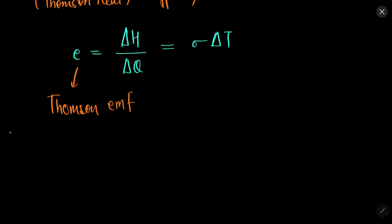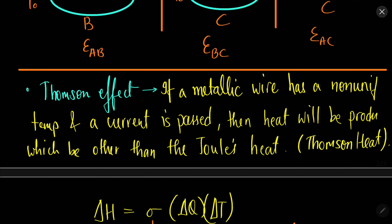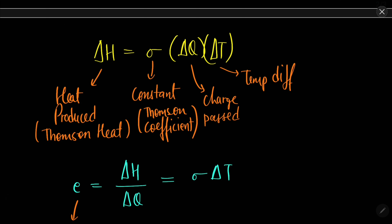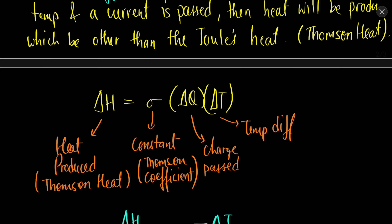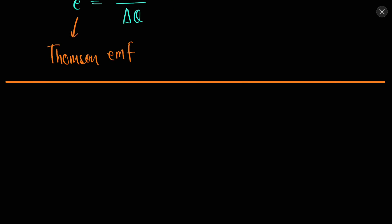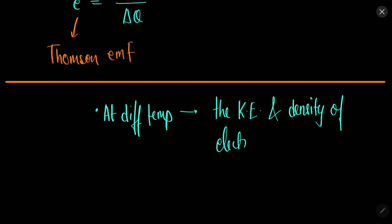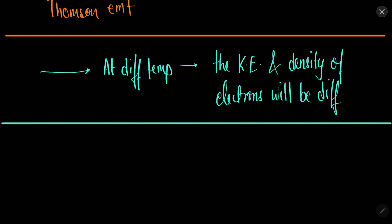This is the Thomson effect — some extra heat is observed if there is a temperature difference throughout the wire. The reason behind the Seebeck effect and the Thomson effect is simple: at different temperatures, the kinetic energy and the density of the electrons will be different, and because of that difference in kinetic energy or density, there will be a flow of charge and production of heat.